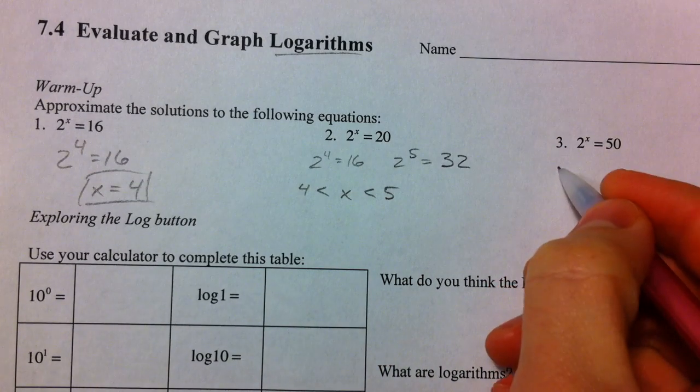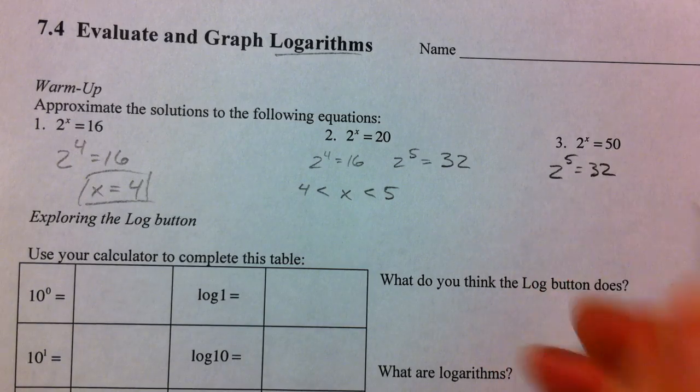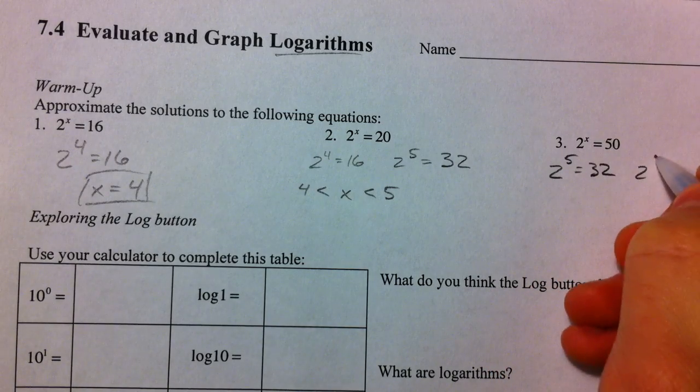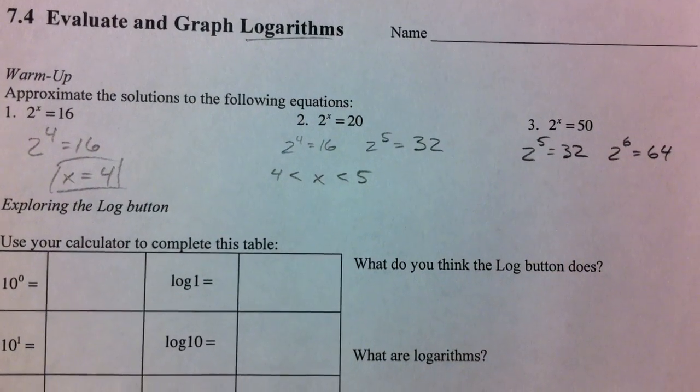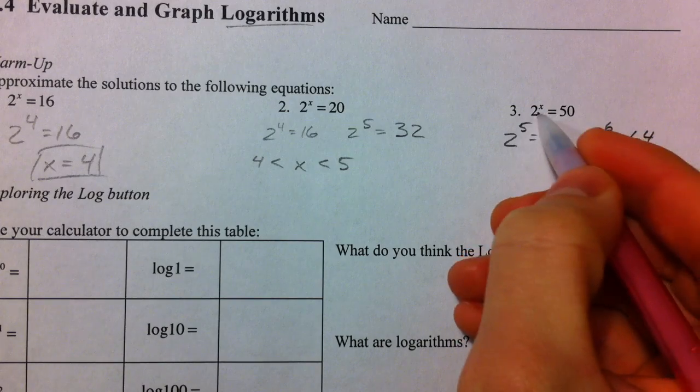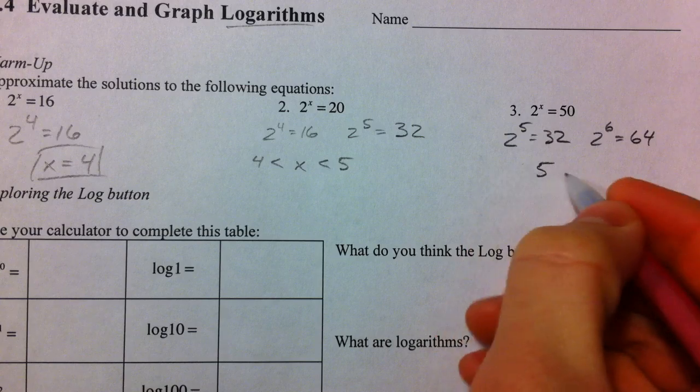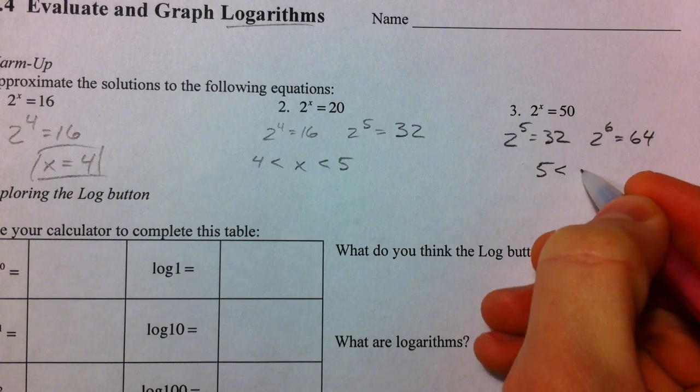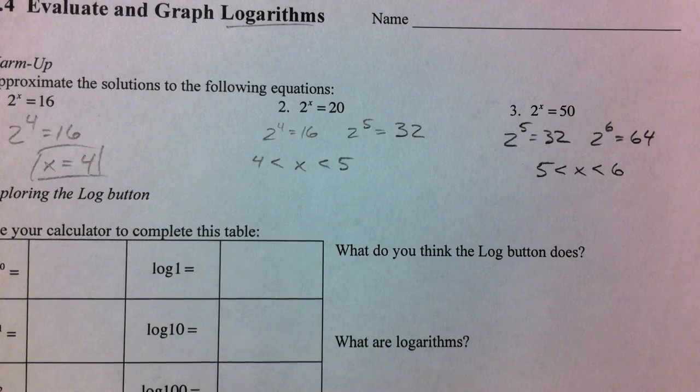Same deal with this one. We know that 2 to the 5th power, like we just said, was 32, and we know that 2 to the 6th power is times another 2, which is 64. So we know that 2 to the 5 point something, that x is in between 5 and 6 for this one. But what exactly? We need logarithms for that.